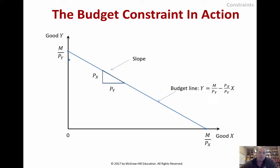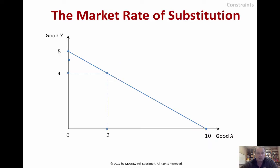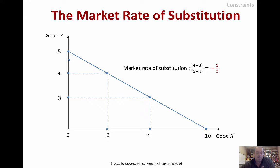The slope of the budget line is of interest — it's the tradeoff as we move from all Y to all X. That slope is sometimes called the market rate of substitution. For example, going from 4 to 3 units of Y and from 2 to 4 units of X gives us the rate of substitution — we had to give up one Y to gain two Xs.